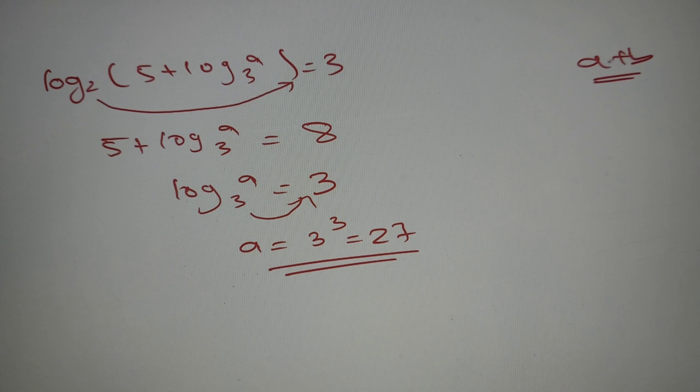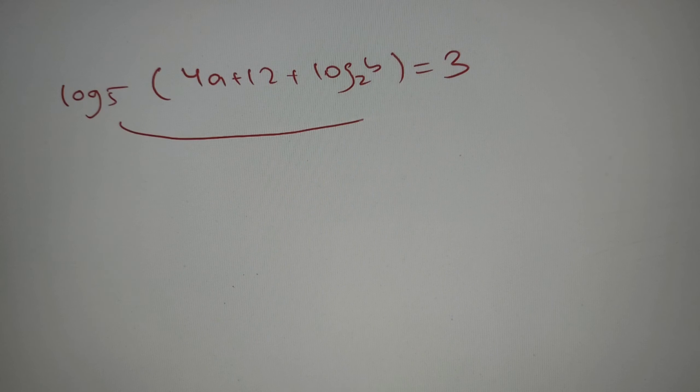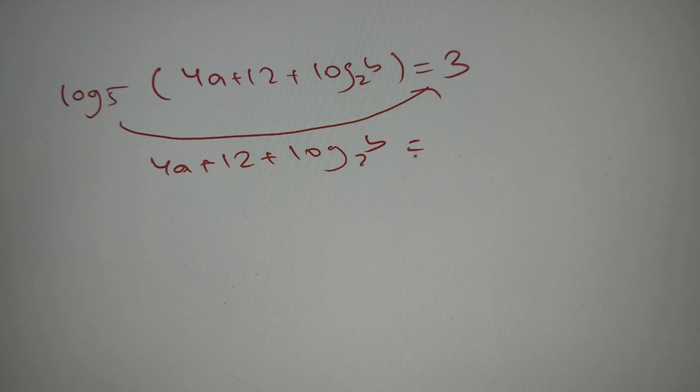Now let's solve the second equation to find the value of b and then finally find the value of a plus b. So over here we have log base 5 of (4a plus 12 plus log base 2 of b) equals 5 raised to the power 3, that is equal to 125.